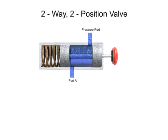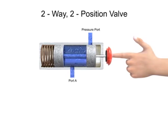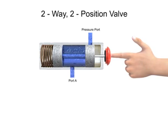This spool valve has two ports and two positions. The first position allows fluid to flow freely. The second position blocks both ports. Even though both ports aren't physically blocked, the lack of fluid entering the pressure port also prevents fluid from exiting outlet port A. Therefore, both ports are defined as blocked, making it a two-way, two-position valve.